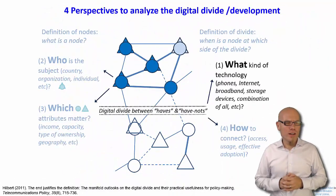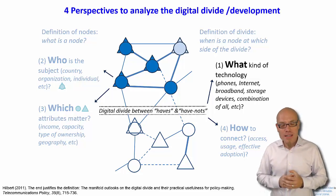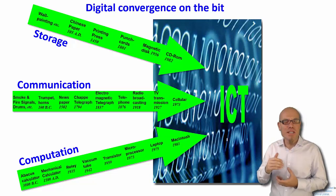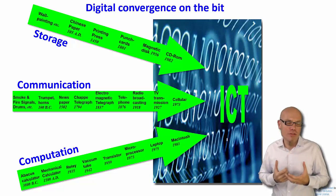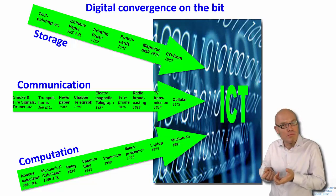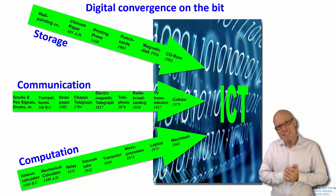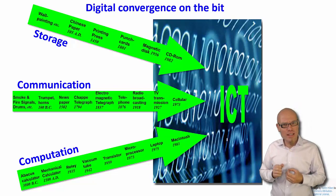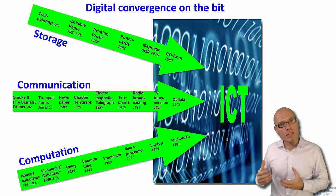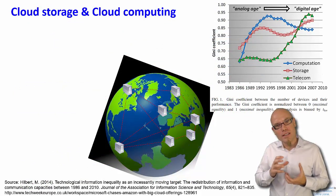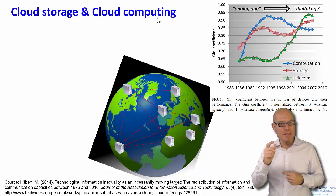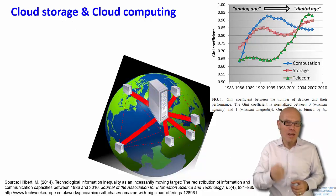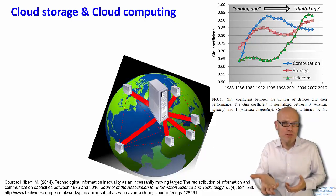Let's go through these four perspectives one by one, starting with the question of what technology we are talking about. Digital information communication technologies are the convergence between three previously separate digital technological trajectories: communication, storage, and computation. In principle we would have to consider every stand-alone computing or storage device, but traditionally when people talk about the digital divide they usually focus only on communication — on telecommunication. This is also theoretically justified because an ever-increasing share of our storage and computation capacity is happening in the cloud, centralized in some big server farm that we all access. For example, a song is stored centrally by a music provider and you simply stream it whenever you want to listen.